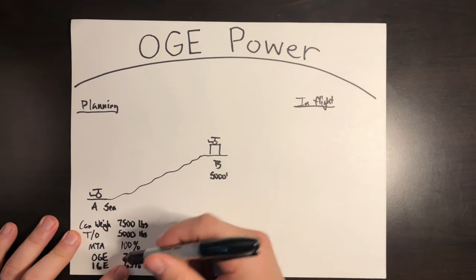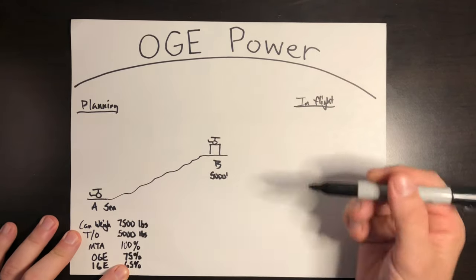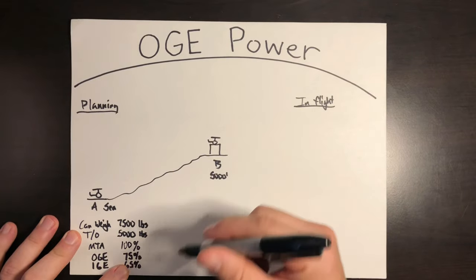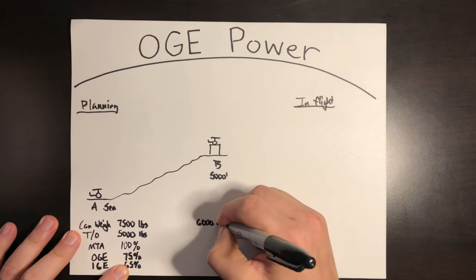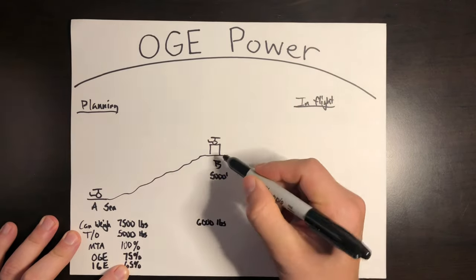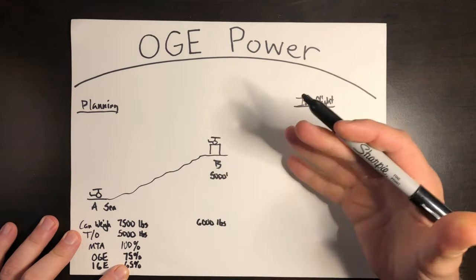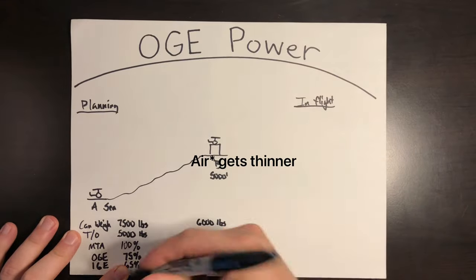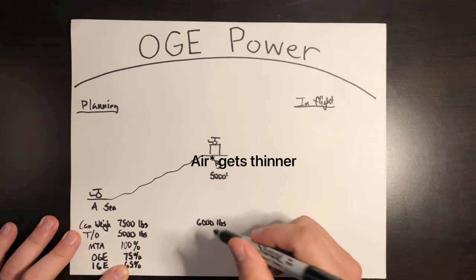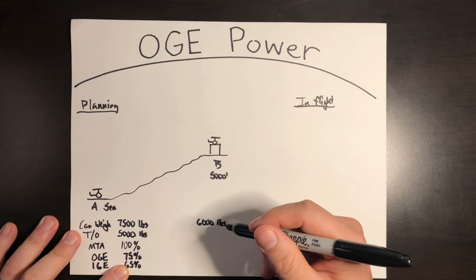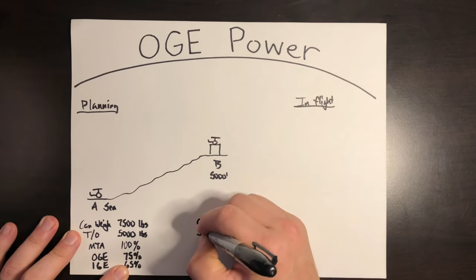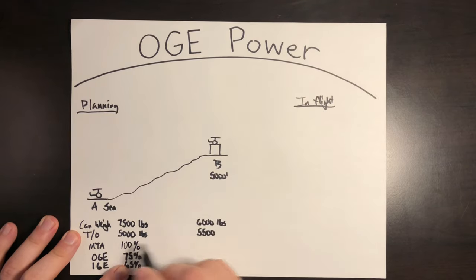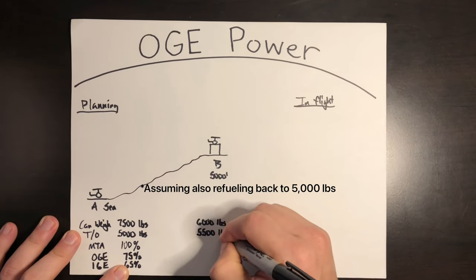Now let's run the numbers for our destination at B. So max weight for OGE power comes down to say 6,000 feet or sorry, 6,000 pounds at this location. As the environmental conditions change, the air gets thinner, less oxygen. I'm just not going to have the ability to carry as much weight as I climb up in altitude. We plan on weighing 5,500 pounds. We talked about picking up 500 pounds of cargo at the destination.